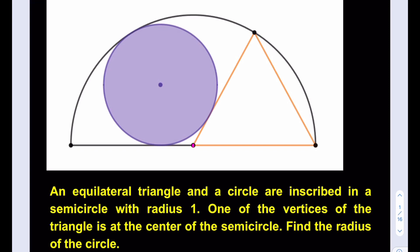Let's get started. We have a semicircle with radius 1 and an equilateral triangle whose base is the radius. It's tangent to the circle. We're supposed to find the radius of the circle, which we'll call R.